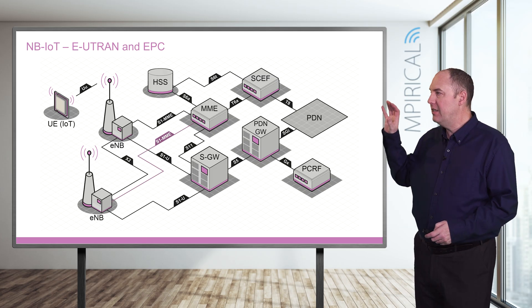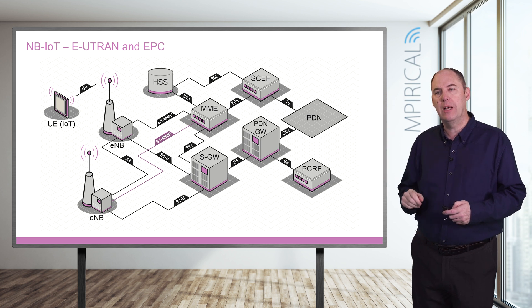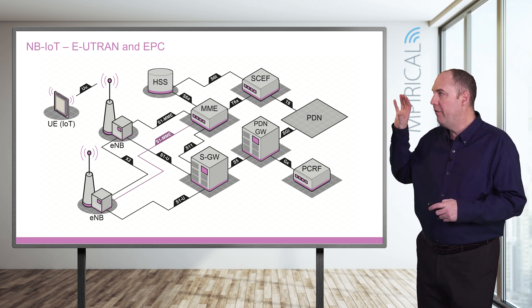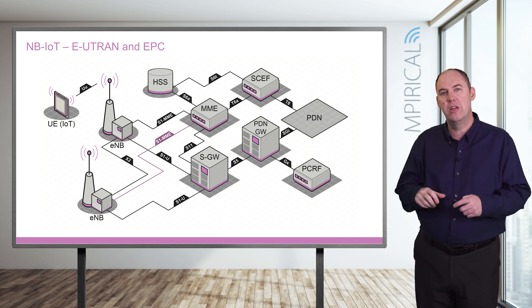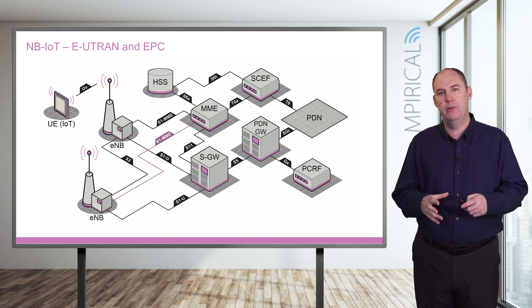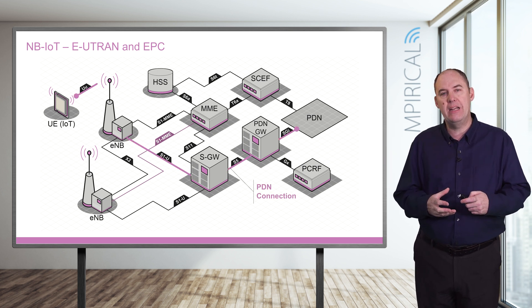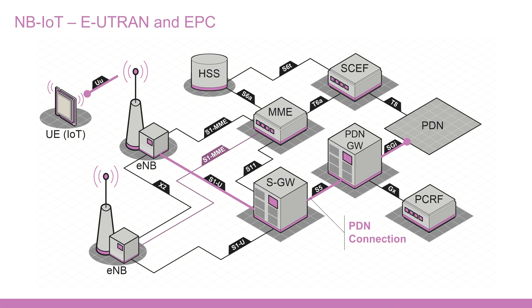Narrowband IoT is a 4G technology, and from Release 13 it was designed to interwork with the 4G core, or the EPC — the Evolved Packet Core. The IoT device connects through the eNodeB, the Evolved Node B, up to the core network. Inside that core network, one of the key functions is the SCEF — the Service Capability Exposure Function. For IoT devices, different methods exist for delivering data: typically data goes through a PDN connection running through a Serving Gateway and a PDN Gateway.